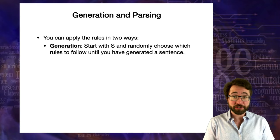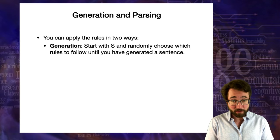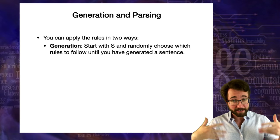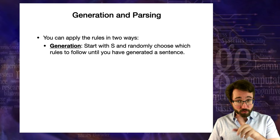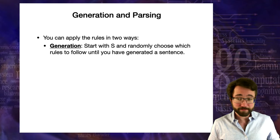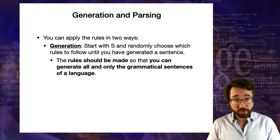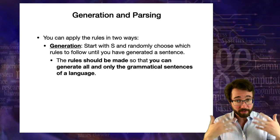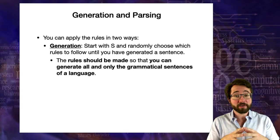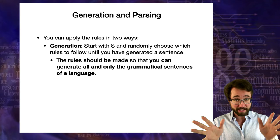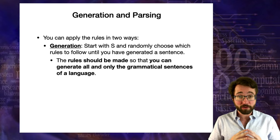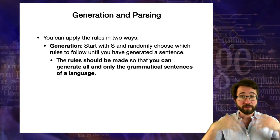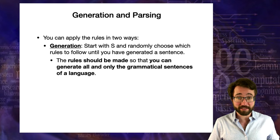The first is called generation. In generation, the goal is to generate a random sentence of the language. You start with the S symbol for sentence and you randomly choose rules to follow until you've generated a sentence. The rules of a language should be made so that when you do this generation process, you can generate all of the grammatical sentences in a language and you don't generate any ungrammatical sentences.